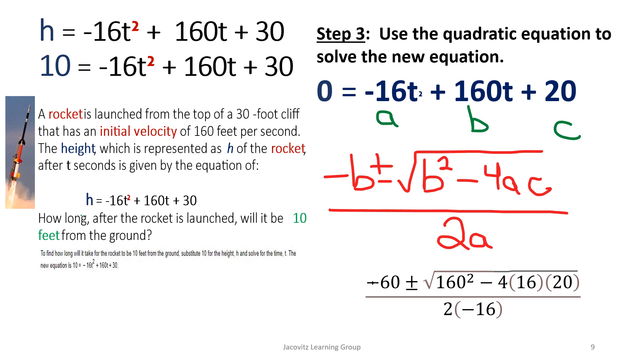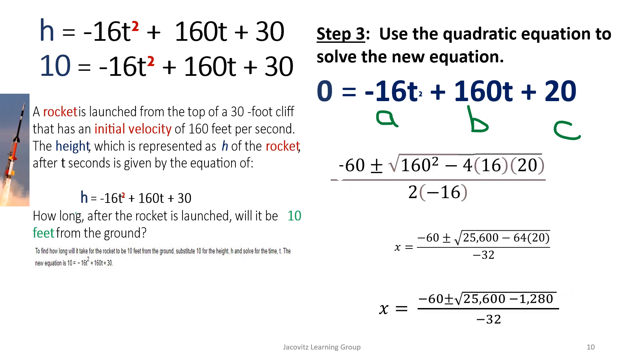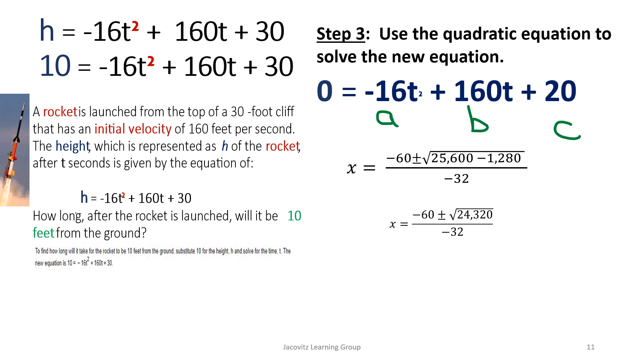Solve using a quadratic equation to solve the new equation. This is your quadratic formula: negative b plus or minus radical b squared minus 4ac over 2a. 160 squared minus 4 times 16 times 20, this is negative 32 at the bottom. Then you solve this. 160 times 160 gives you 25,600. 64 times 20 gives you 1,280. You subtract that. Remember you have to keep this here and do a plus or minus of both values.